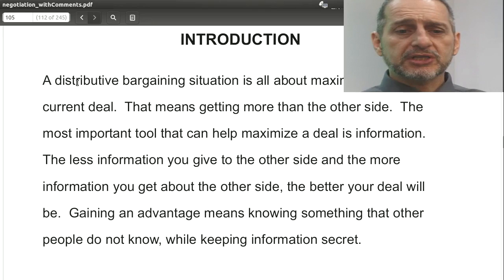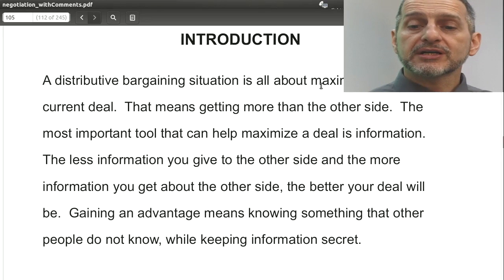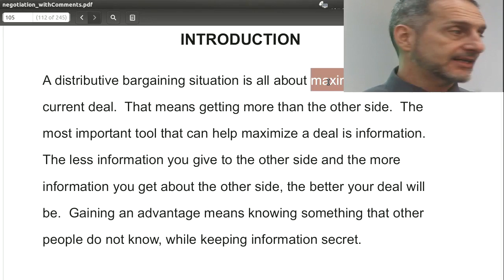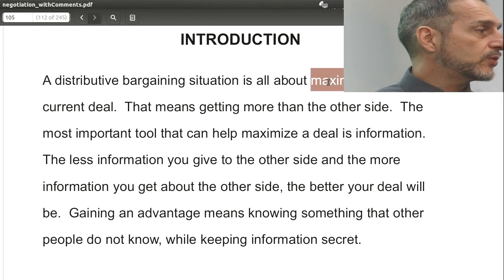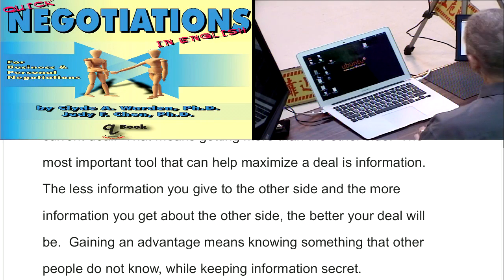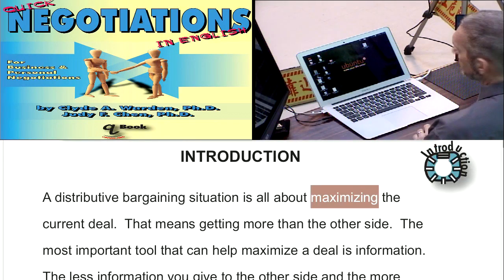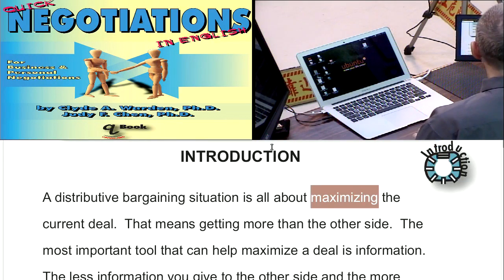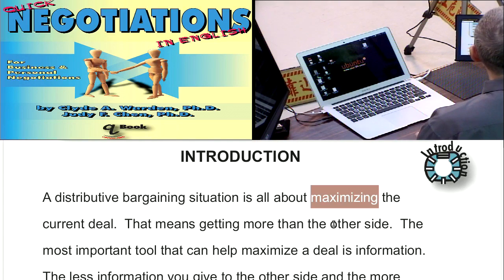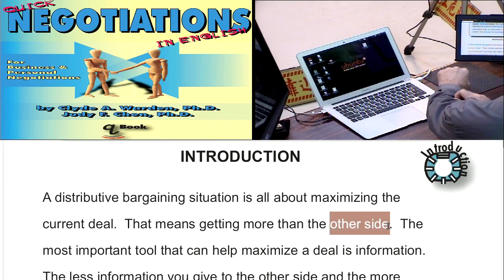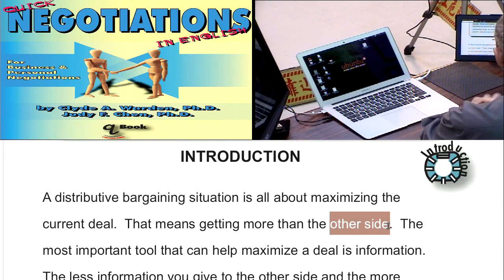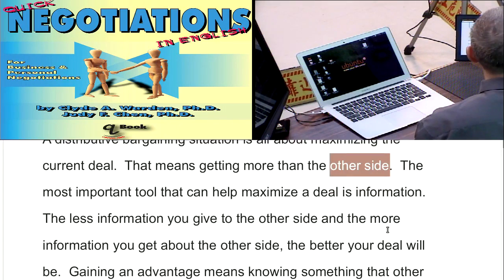Let's quickly remind ourselves that a distributive bargaining situation is all about maximizing, about winning — making the best you can out of the situation. This means you're going to beat the other side, you're going to get more than what they get, or they're going to give up more than what you give up, or some combination of those things.